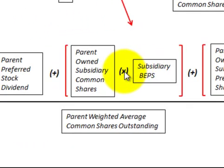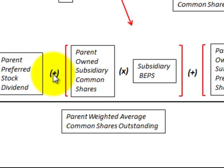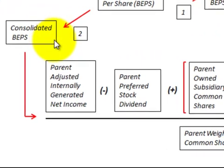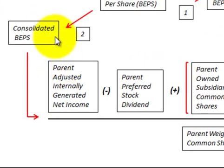So we have these two quantities that we multiply out and add together for our consolidated basic earnings per share numerator. Then we divide that total by the parent's weighted common shares outstanding. That gives us our formula for the consolidated basic earnings per share.